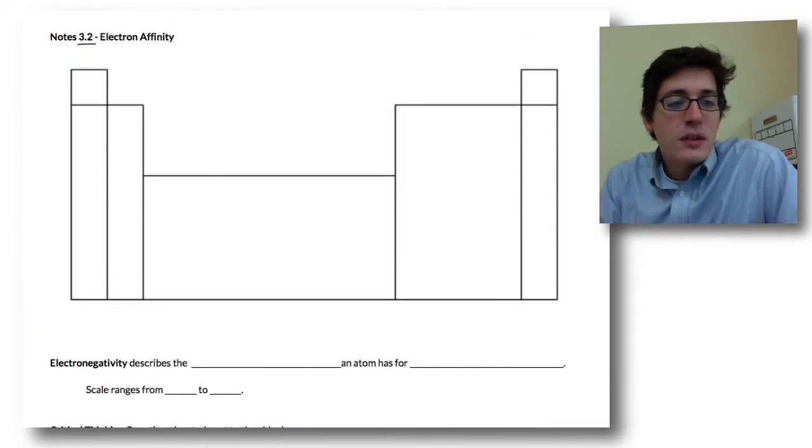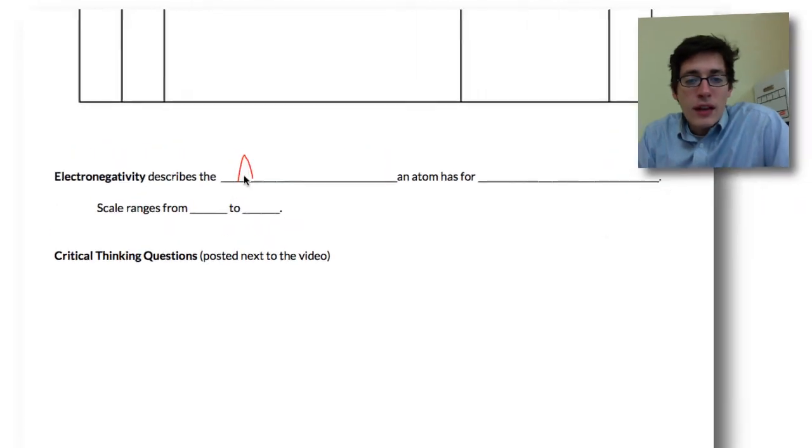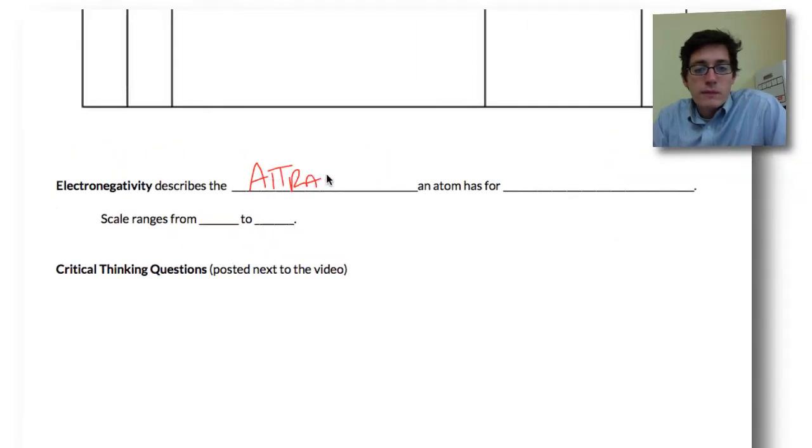Electron affinity is a really fancy way of saying it's describing the attraction, or the pull an atom has for electrons. Atoms pull on electrons differently. After you fill this in, remember this is the attraction an atom has for electrons.